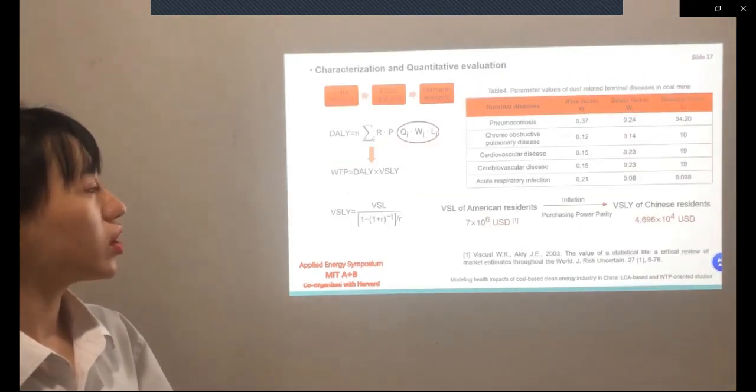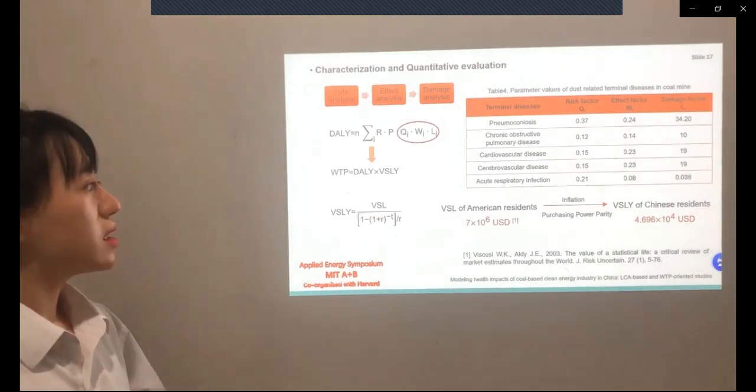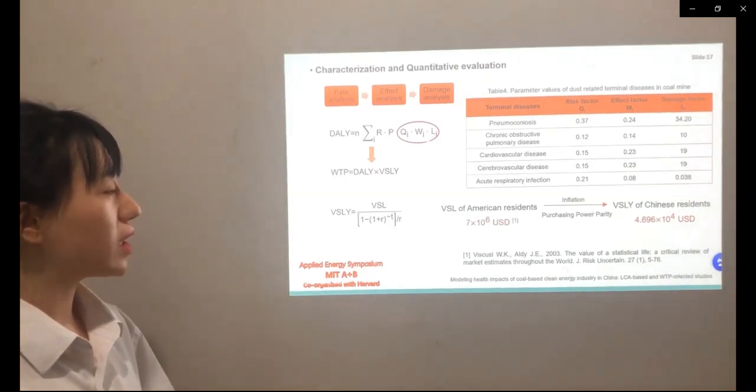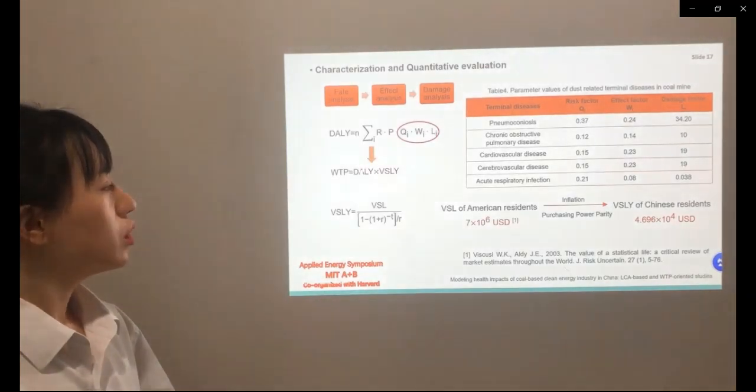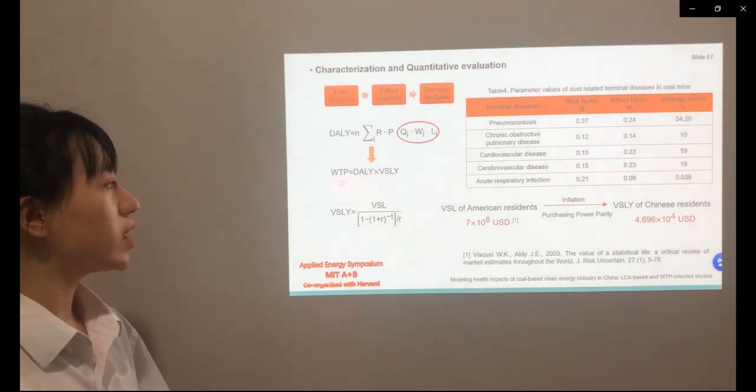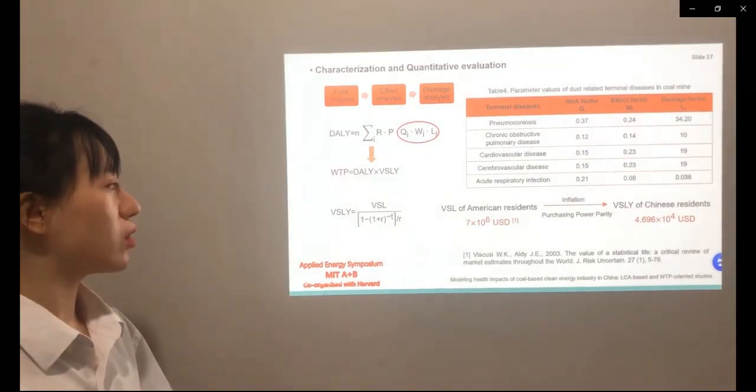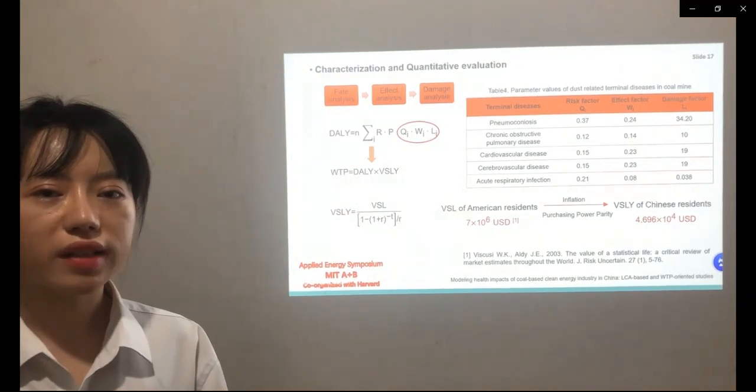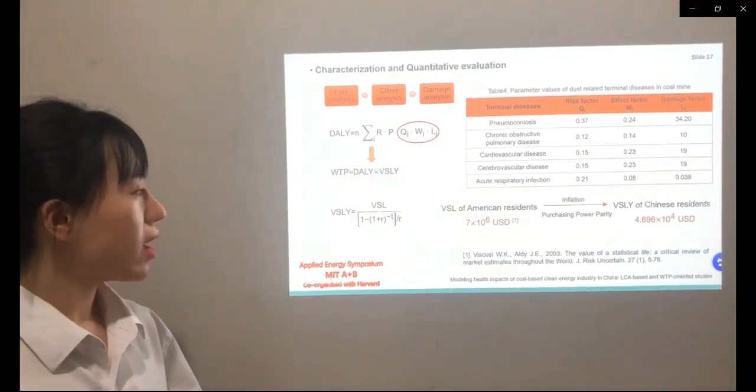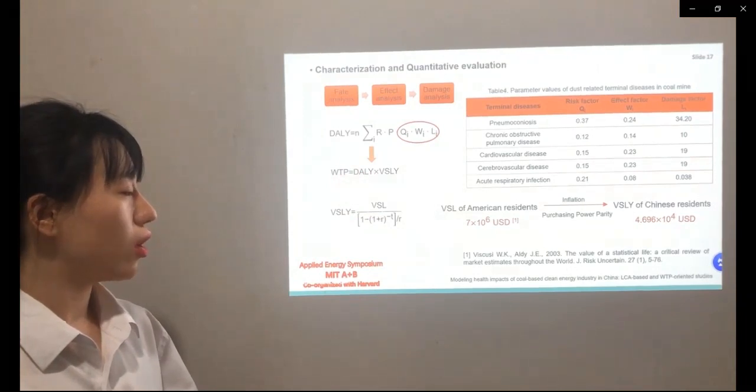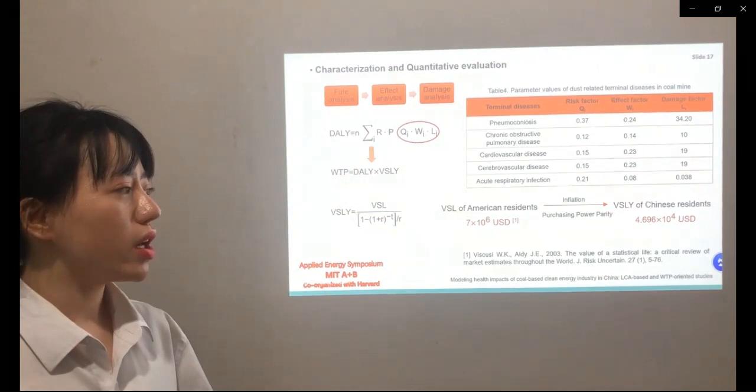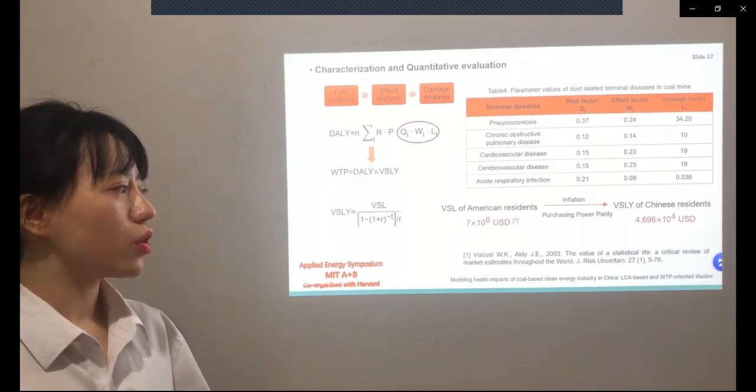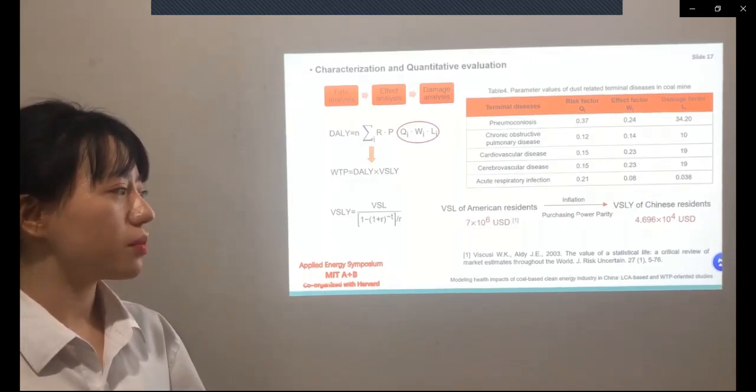In characterization and quantitative evaluation, to realize these equations, we need to find the values of risk factor, disability factor, and damage factor at first. To monetize the disability adjusted life years, we need to find out the VSLY, which means the value of statistical life year. We usually calculate the VSLY of Chinese residents based on the VSL of American residents with consideration of inflation and purchasing power parity method.